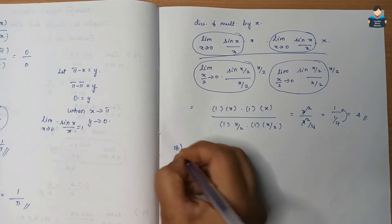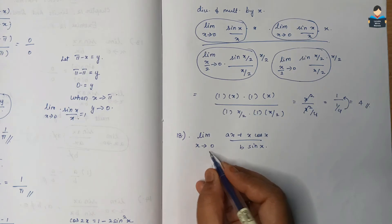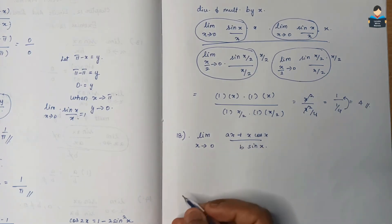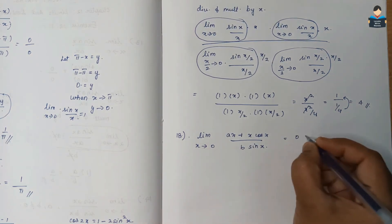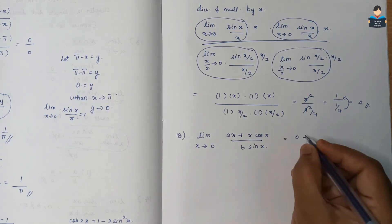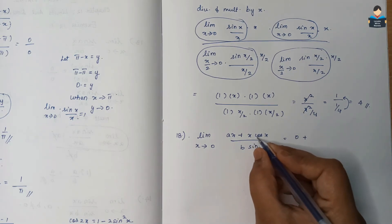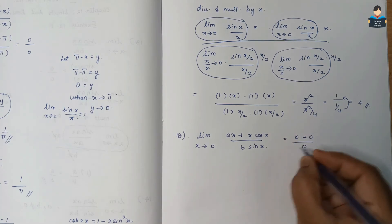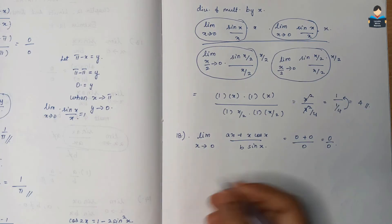Question 18: limit x tends to 0 of (ax + x·cos x) by (b·sin x). Substituting x = 0: 0 + 0×cos(0) in numerator = 0, and b·sin(0) = 0. So again 0/0 form. We need to simplify.